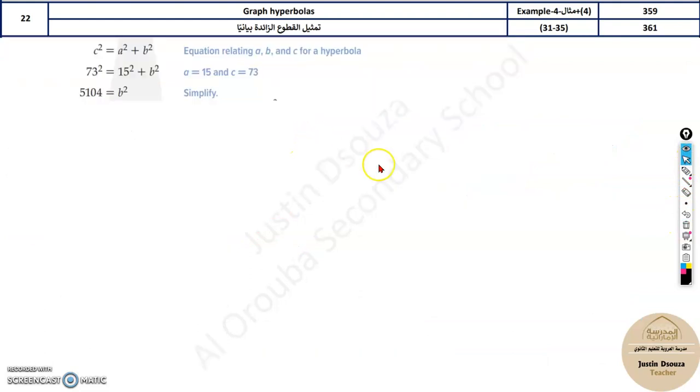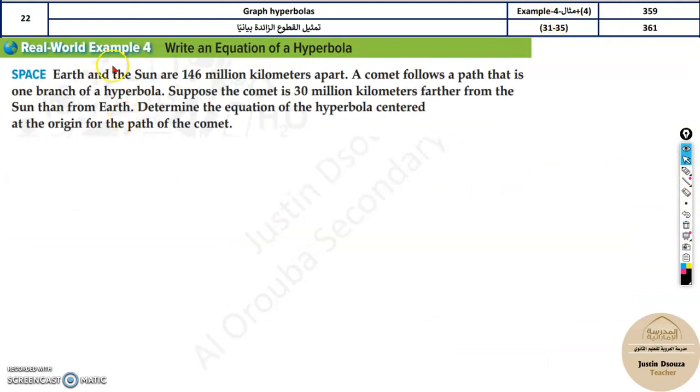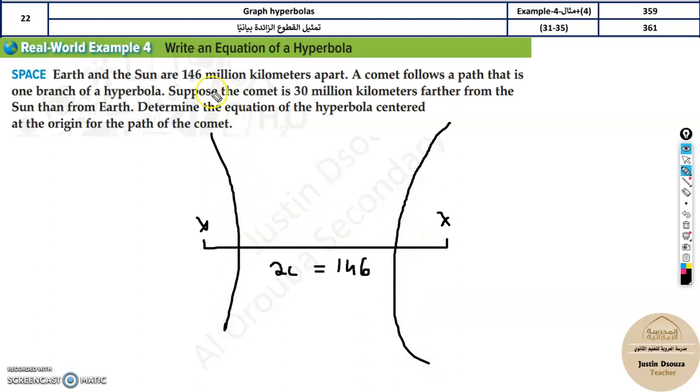Let's see a problem over here. Example problem mentioned: Earth and Sun are 146 million kilometers apart. A comet follows a path that is one branch of a hyperbola. Understanding this, whatever the distance they gave you is 2c, that is 146. And a comet is coming, that is one branch of the hyperbola. Suppose the comet is 30 kilometers farther from Sun than from Earth.